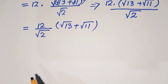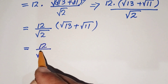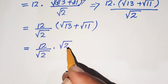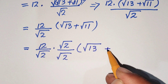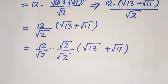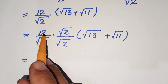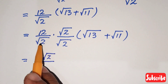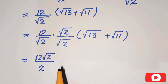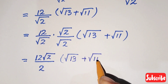We rewrite this as 12 over square root of 2, times square root of 13 plus square root of 11. Multiplying and dividing by square root of 2, we get 12 times square root of 2 over 2, and since square root of 2 squared equals 2, we get times square root of 13 plus square root of 11.